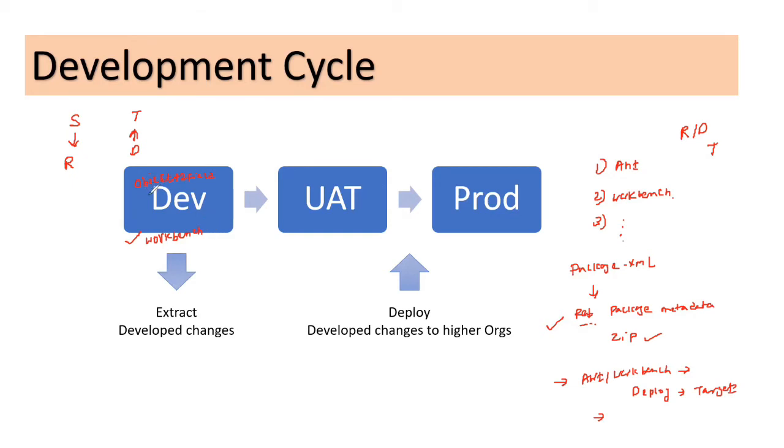Now, if I have to get this object and two fields moving to the other orgs, one of the options that I have is Workbench. So if I have to use this Workbench, what I need to do is I need to extract that metadata. For that, I need package.xml. So I need to prepare that package.xml. I need to provide the members of the objects that I want to retrieve. Post that, I need to feed this package.xml to the Workbench and I need to use the option called retrieve so that I can extract the developed changes.